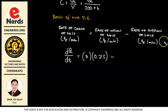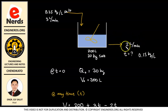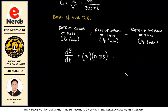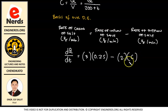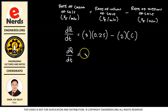Minus the rate of outflow. We don't know the concentration directly, but we have our volumetric flow rate of 2 liters per minute. So we multiply that by our concentration C, which changes with time. That gives us: dQ/dt = 3 × 0.25 − 2C, which equals 0.75 − 2C.